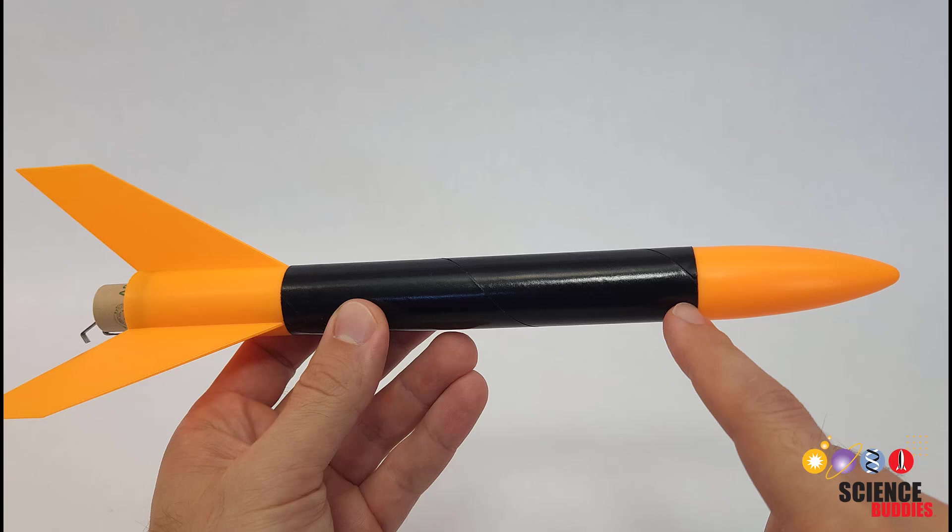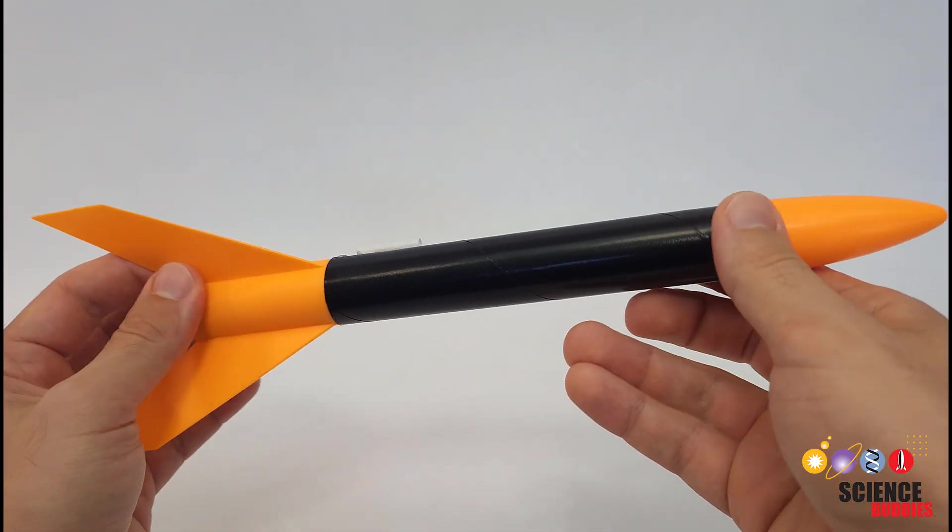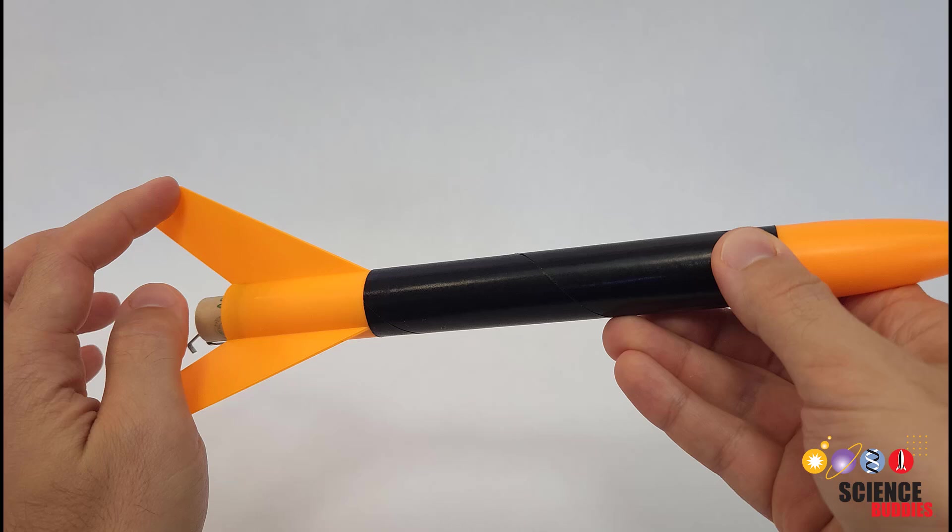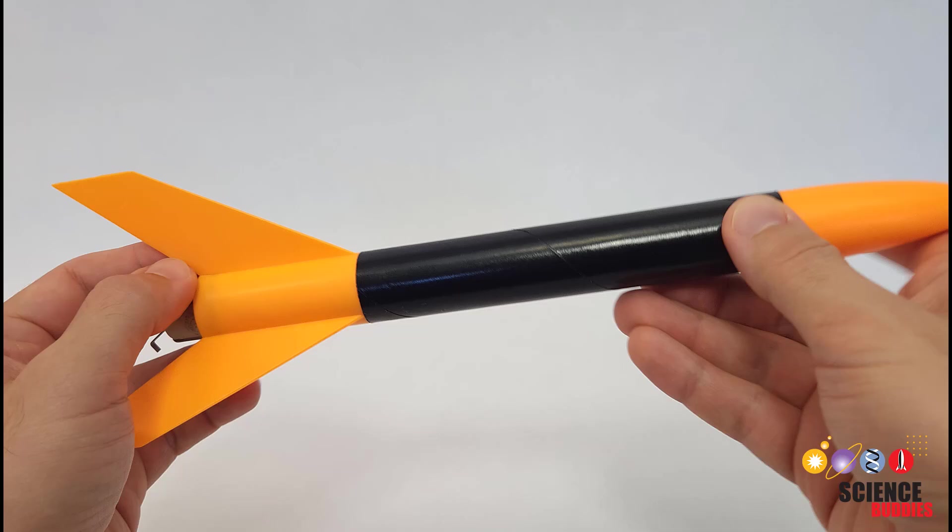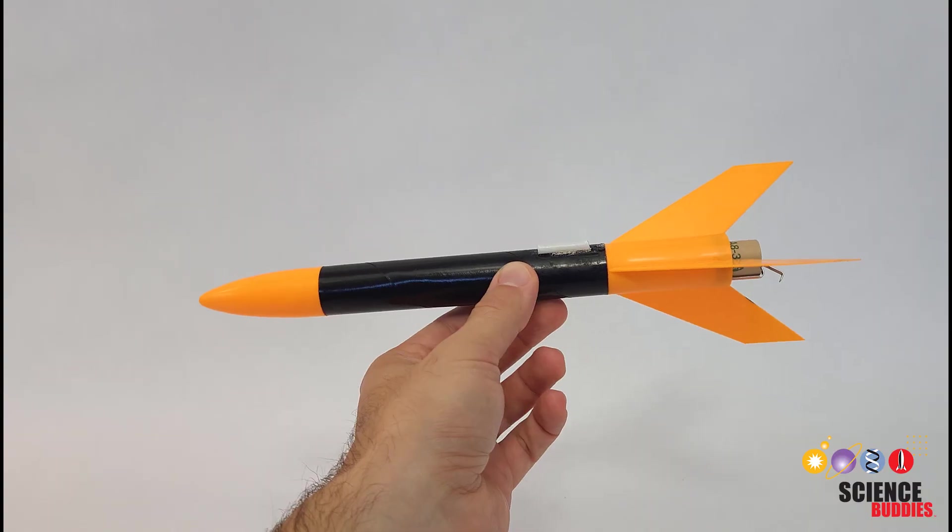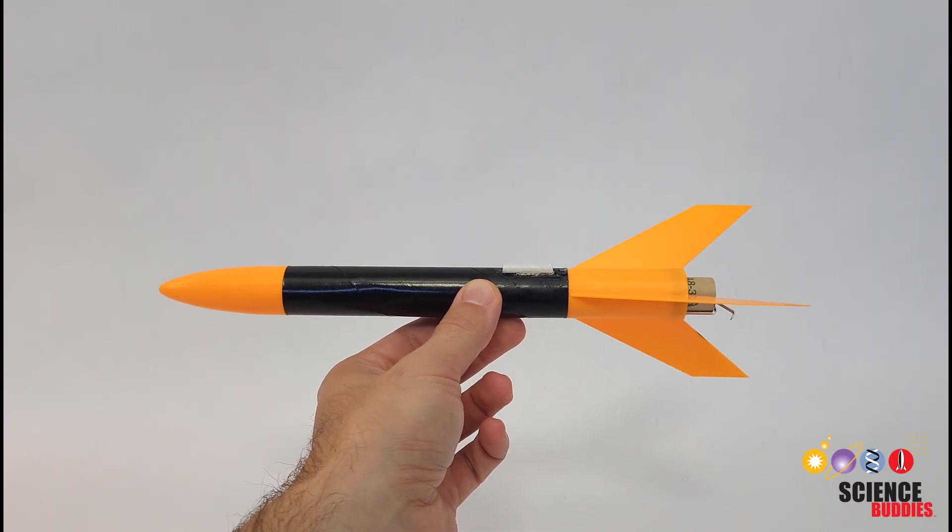Instead of depending on the mass distribution, the center of pressure depends on a rocket's surface area distribution. The fins don't add a lot of mass, but they add a lot of surface area and help bring the center of pressure towards the back of the rocket. This is what helps keep the rocket stable when it flies.